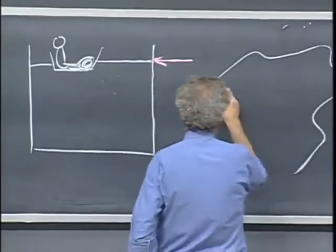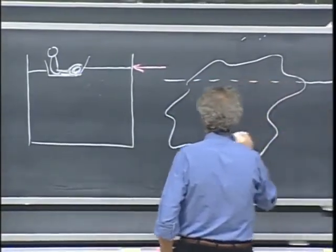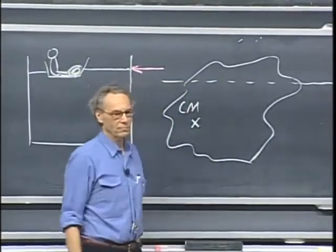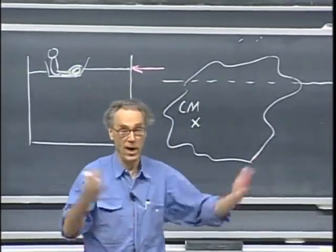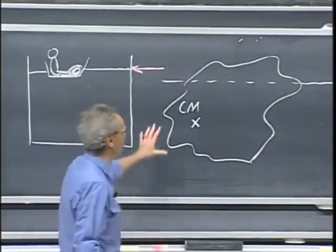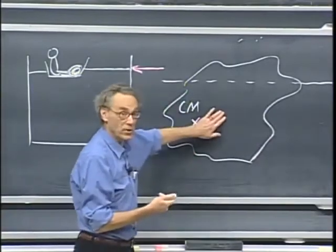Suppose I have an object here which is floating in water. Here's the water line. And let here be the center of mass of that object. Could be way off-center, could be an iceberg, could be boulders, could be rocks in there, right? It doesn't have to be uniform density. Center of mass could be off the geometric center.